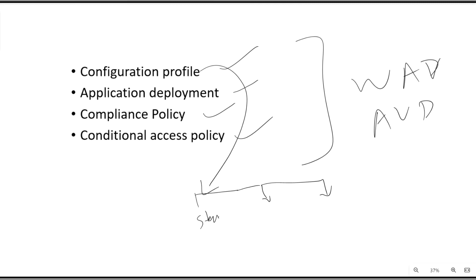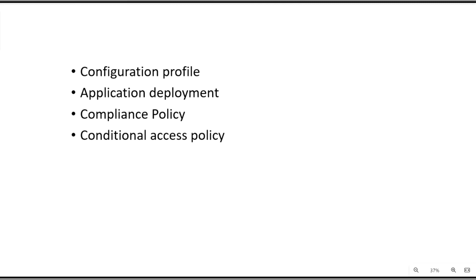Configuration profiles may include hiding the shutdown or restart menu, or adding an administrator to the local admin group, and so on. There are many policies available in Intune under configuration profiles, and you can select according to your requirement. However, some configuration profiles are not supported in Azure Virtual Desktop — they are only applicable to physical desktops — so you need to ensure you configure only the supported ones.